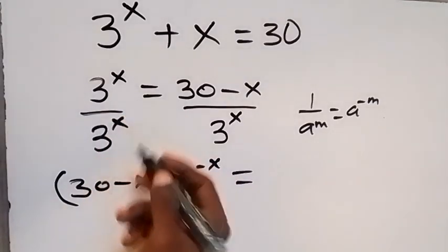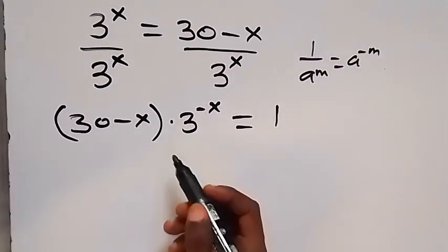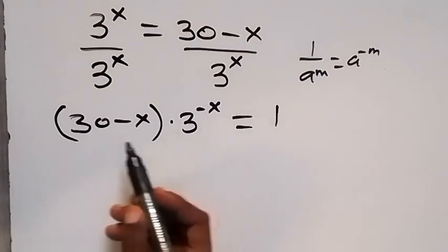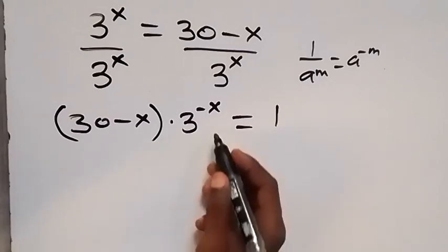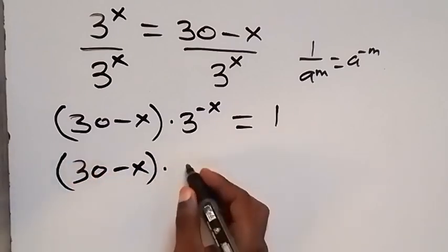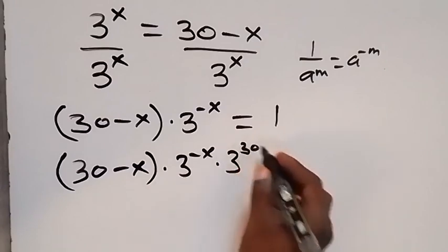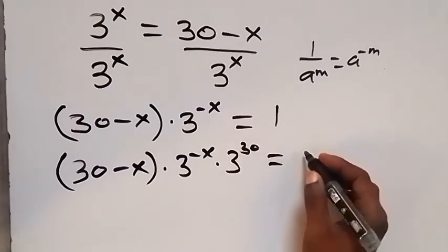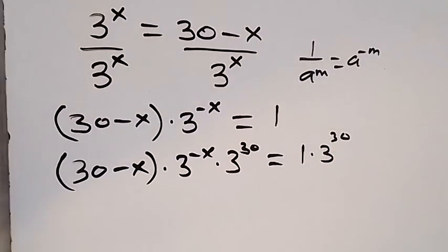This equals 1. Now we have minus x in the power. Let's try to make the power here equal to 30 minus x. That means we multiply by 3 raised to power 30 on this side, giving 30 minus x times 3 raised to power minus x, times 3 raised to power 30. We also multiply by 3 raised to power 30 on the other side to balance, giving 1 times 3 raised to power 30.